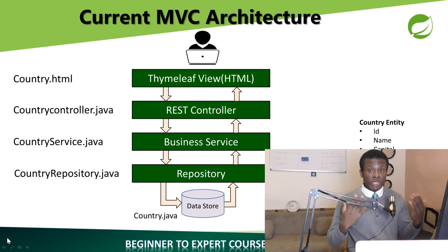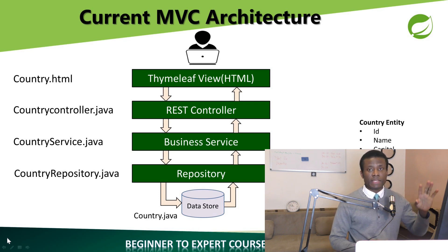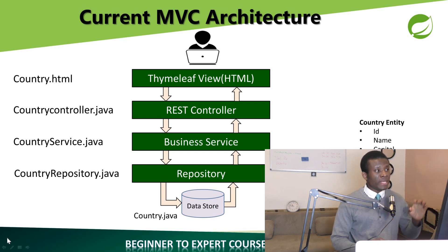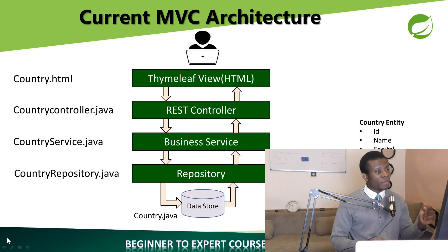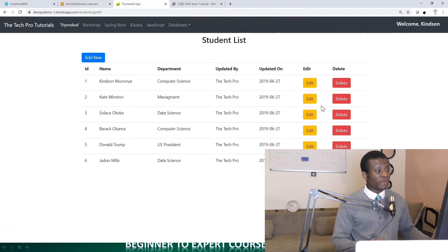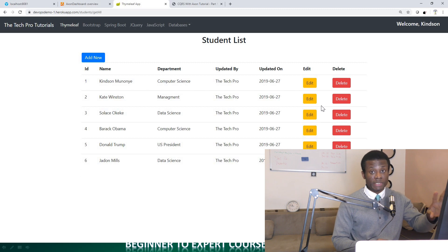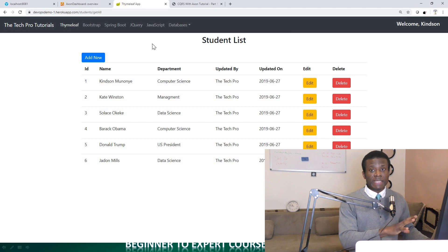I'm going to be talking about something really very important and that is the future of application development. What you see on the screen is how we currently build applications right now. This is called the MVC Layout Architecture and it's easy to understand because you can easily build up an application using this method. This application I built — you can find it in the description box, both the repository on GitHub and the procedure to build it — is exactly based on the MVC Layout Architecture.